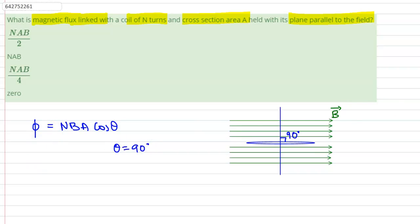Therefore, this equation can be rewritten as φ equals N B A cos 90 degrees. Therefore, this comes out to be φ equals 0.